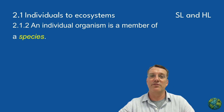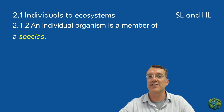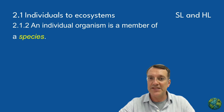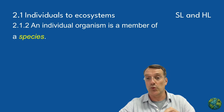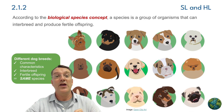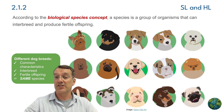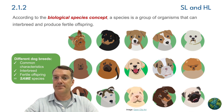At the most basic level, we have individual organisms. According to the biological species concept, a species comprises organisms that can interbreed and produce fertile offspring. To illustrate this concept, let's look at some examples.